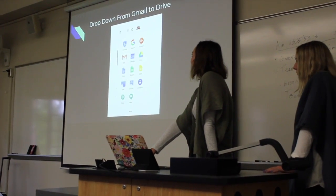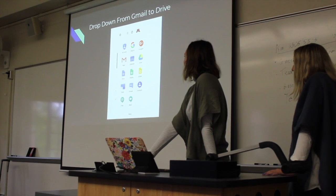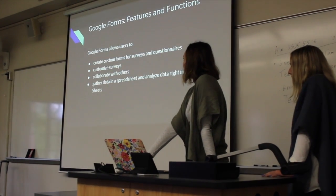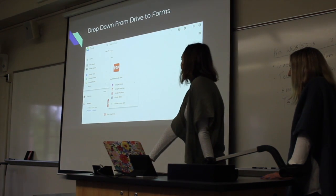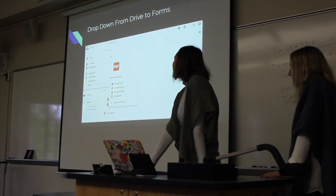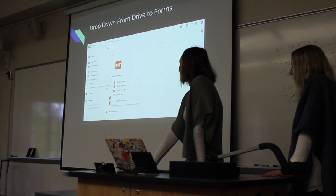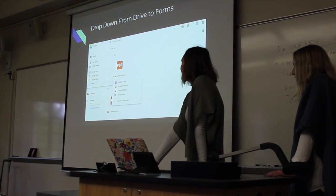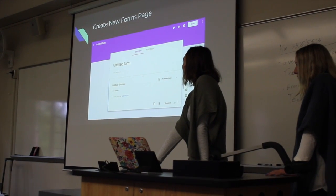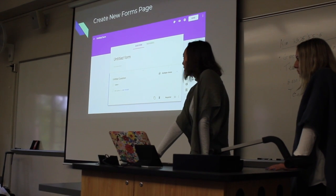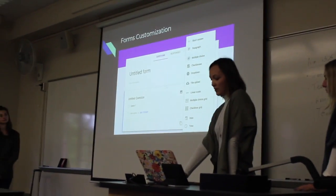For an overview, we're going to talk about features and functions. Google Forms allows users to create a custom form and survey with a questionnaire, where they can customize surveys, collaborate with others, gather data into a spreadsheet, and analyze the data right in Google Sheets. It's accessible from the drop-down menu on the main Google page in the top right corner. You go to Drive, click New in the top left, go to More, and Google Forms is right there.